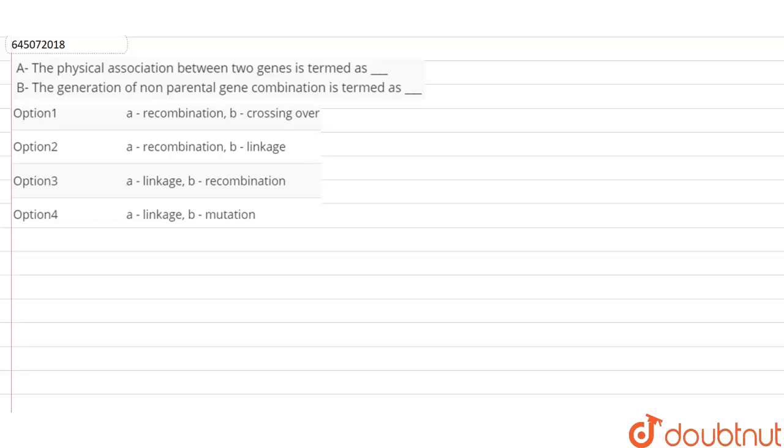So in the first statement, they are saying physical association between two genes is termed as dash. So here we are talking about the inheritance or how a particular gene is passed on from one generation to the next, from a parent to its progeny. So simultaneously, we are observing the inheritance of two different genes. So this is a case of a dihybrid cross.